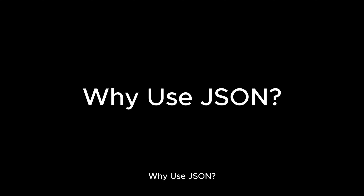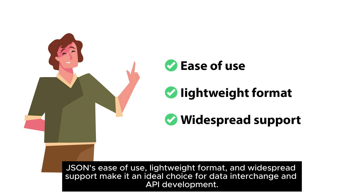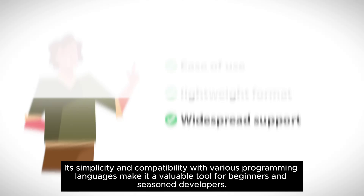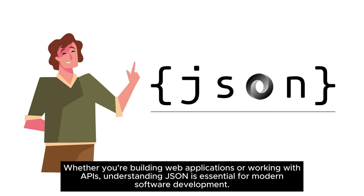Why use JSON? JSON's ease-of-use, lightweight format, and widespread support make it an ideal choice for data interchange and API development. Its simplicity and compatibility with various programming languages make it a valuable tool for beginners and seasoned developers alike. Whether you're building web applications or working with APIs, understanding JSON is essential for modern software development.